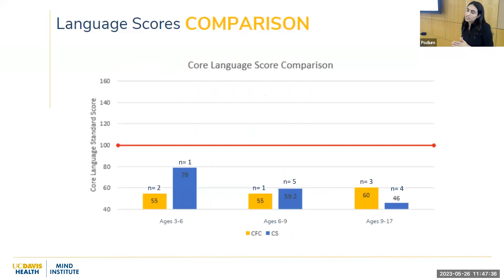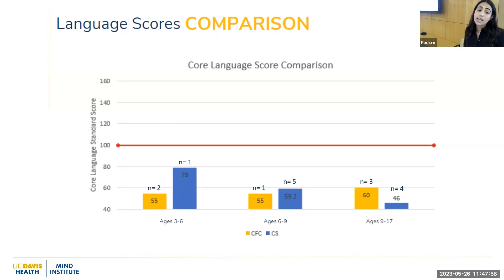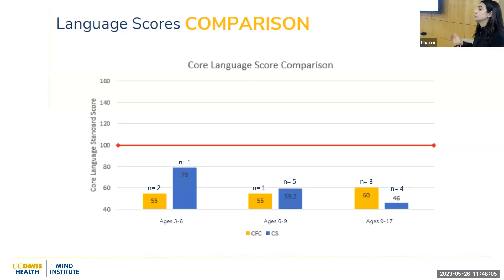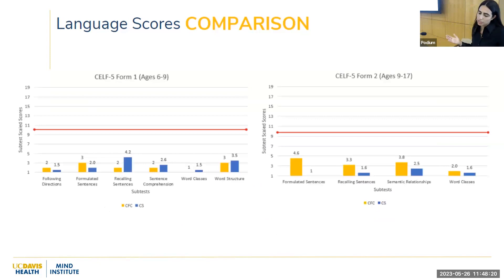The test used was the Clinical Evaluation of Language Fundamentals (CELF), which separated children into three groups: three children aged three to six, six children aged six to nine, and seven children aged nine to seventeen. An average score on this test is a standard score of 100, represented by the red line, with a standard deviation of about 15, so 85 and below is considered below average. As you can see, as a whole these children are performing quite low — in the below average to low range. These scores should be interpreted with caution, as the test was not standardized to this population and smaller sample sizes made group comparisons difficult.